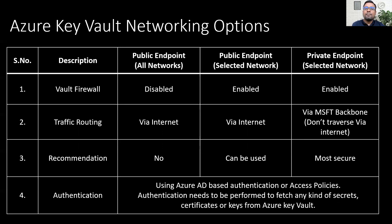Within Azure Key Vault, there are three different networking options available. The first is called public endpoint all networks, where there is no firewall enabled at all. The second option is called public endpoint selected networks, where the firewall is enabled and traffic is permitted only for a specific Azure subnet or VNet. The last option is the private endpoint, where the firewall is enabled and traffic never hits the public internet at all. In both public endpoint options, traffic will always hit the internet. The private endpoint is considered the most secure approach.